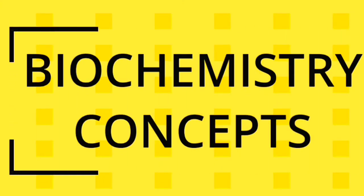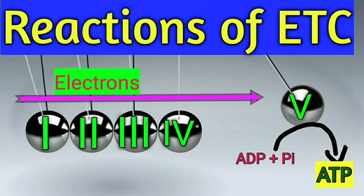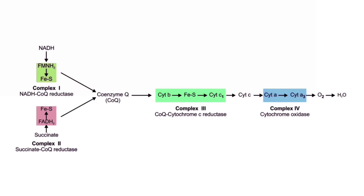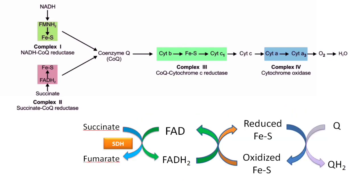Hello everyone, welcome to my channel Biochemistry Concepts. This video is about reactions of the electron transport chain — specifically, what happens in each complex during the transfer of electrons. There are four complexes in the inner mitochondrial membrane, and these complexes contain many polypeptide or protein subunits and several iron centers. These components can be readily reduced or oxidized, and the transfer of electrons takes place as they flip between reduced and oxidized states.